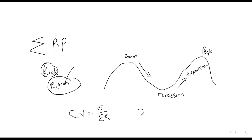A higher CV simply implies that we have higher risk. Given two portfolios, what you would pick depends on the type of investor. If it's a risk-averse investor, they will avoid risk at all costs. If it's a risk-seeker, they'll be attracted to risk at all costs. You need to really understand these concepts — this is one of the most survivable topics.